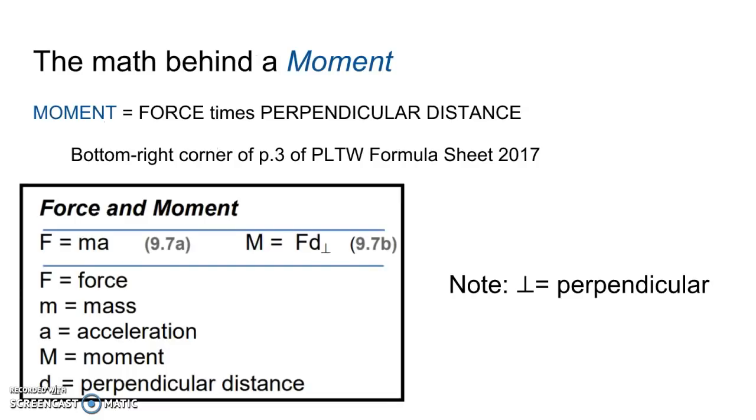The math behind that is very simple, and this is on page three of the PLTW formula sheet for 2017 version at least. It's towards the bottom right corner, and you can see it is M equals F times d with that little symbol next to it. That little symbol means perpendicular. Really what we have is the moment equals the amount of force that you apply times the perpendicular distance from the point of rotation to where you apply the force. That's the mathematical formula we're interested in—force times distance.